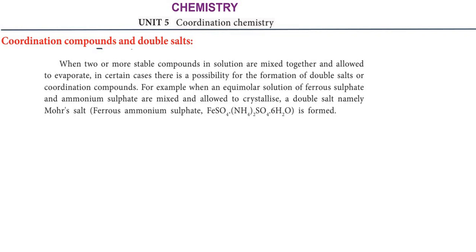In some cases, we will see that a compound is formed. In some cases, the mixing is going to form either a Double Salt or a Coordination Compound. So a Coordination Compound also means a Double Salt as a combination. If we want to know the property of a stable compound, we could use Coordination Compounds.